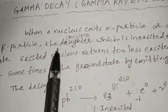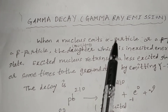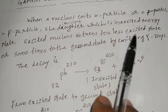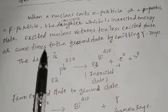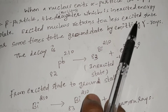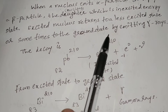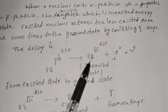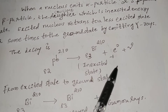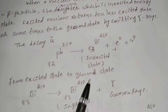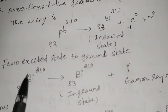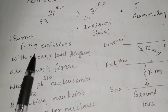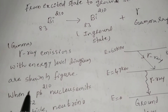We shall discuss gamma decay or gamma ray emission. When a nucleus emits an alpha particle or beta particle, the daughter nucleus, which is in an excited state, returns to a less excited state or sometimes to the ground state by emitting gamma rays. The decay of Lead-82-210 emits an excited nucleus electron, that is a beta particle and neutron. The excited nucleus then returns to the ground state and emits gamma rays.